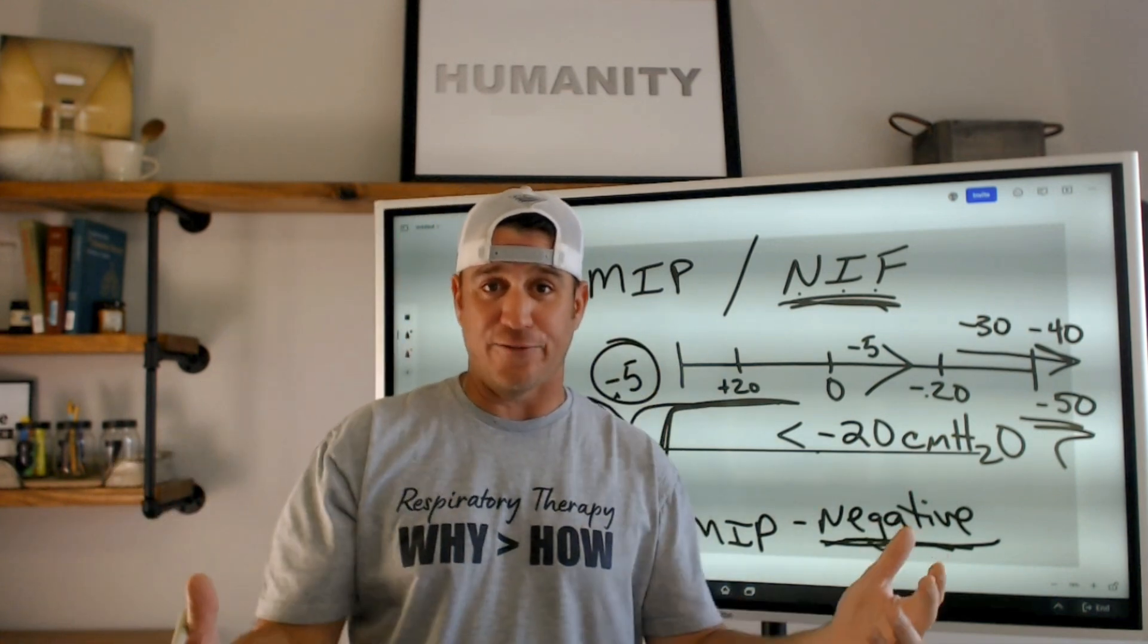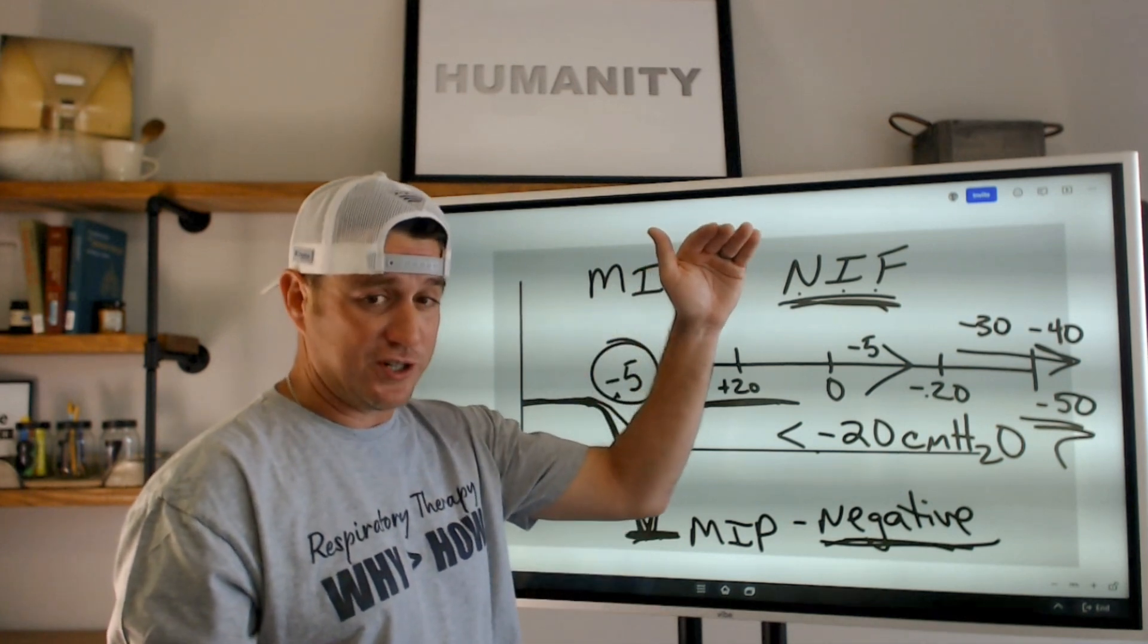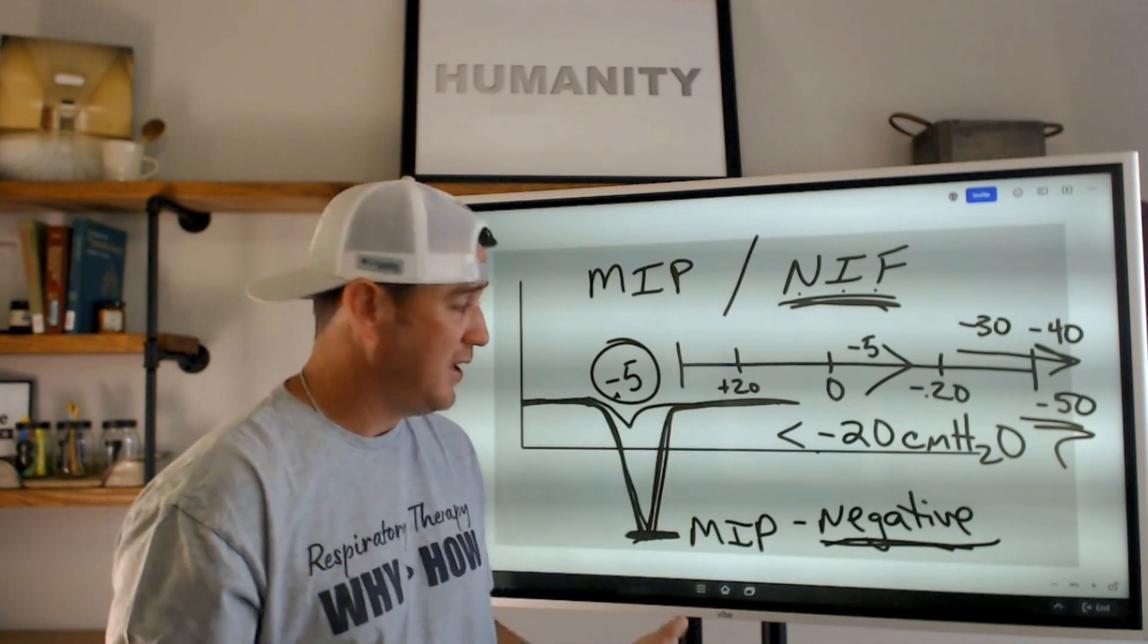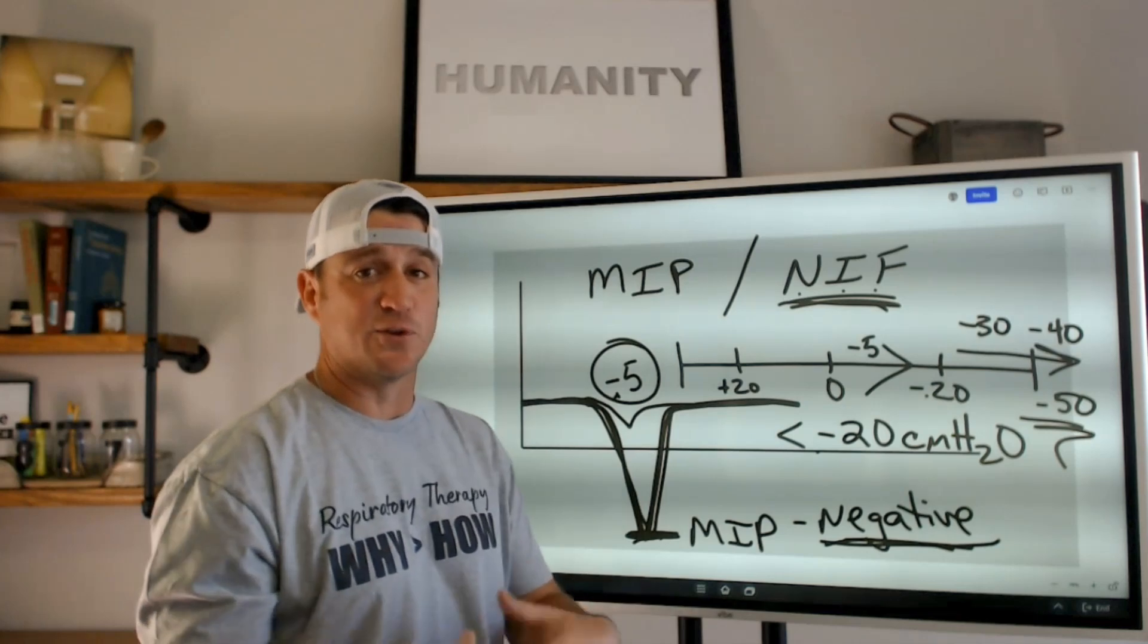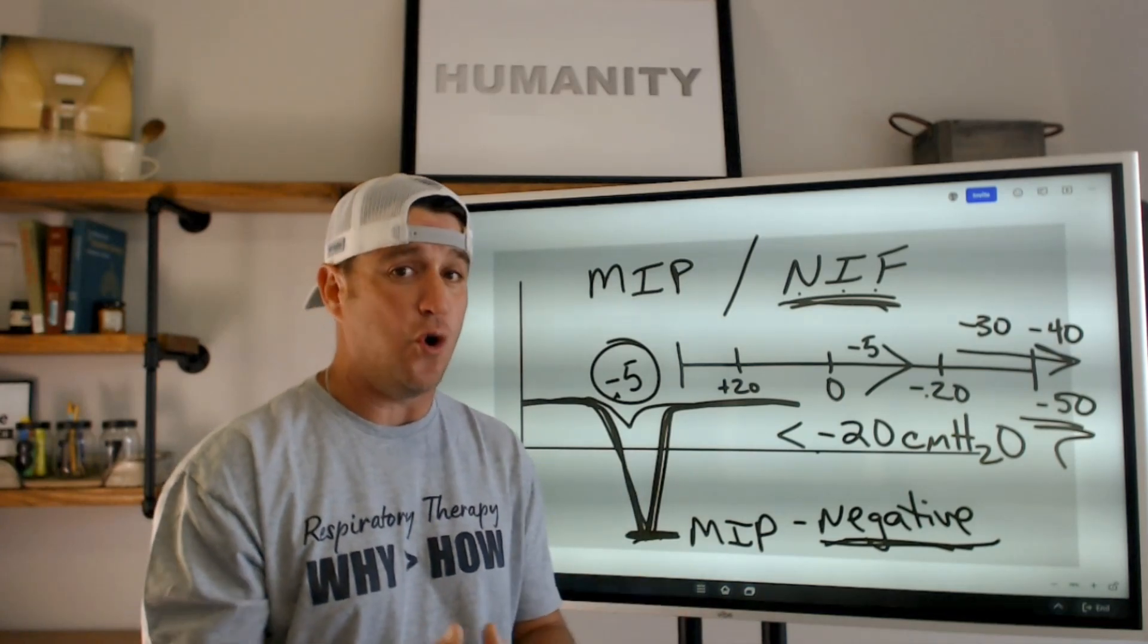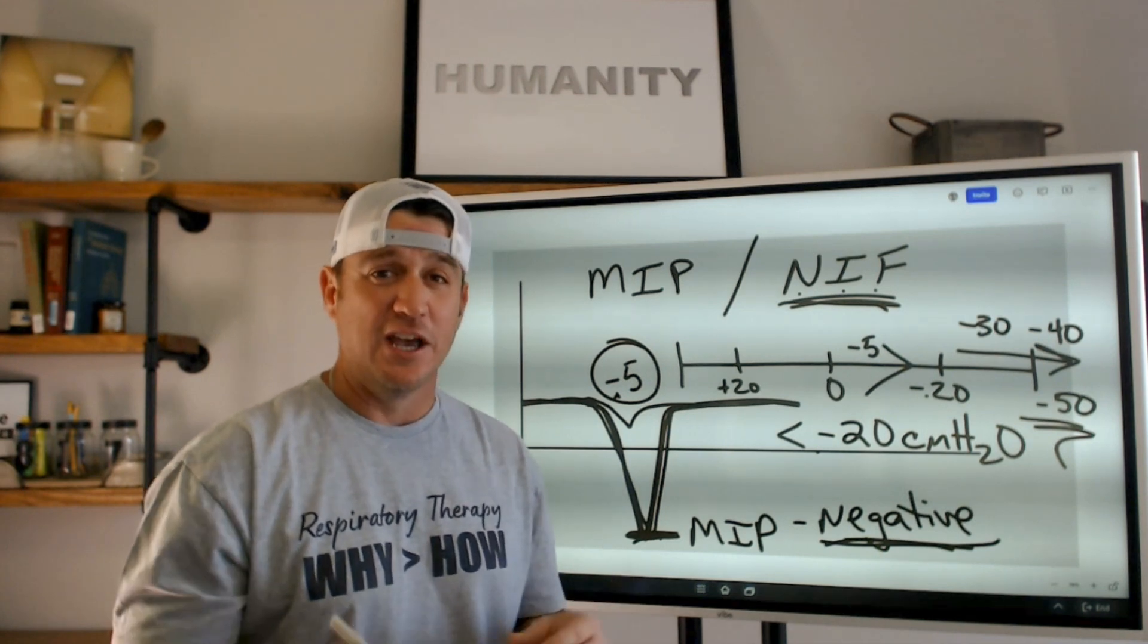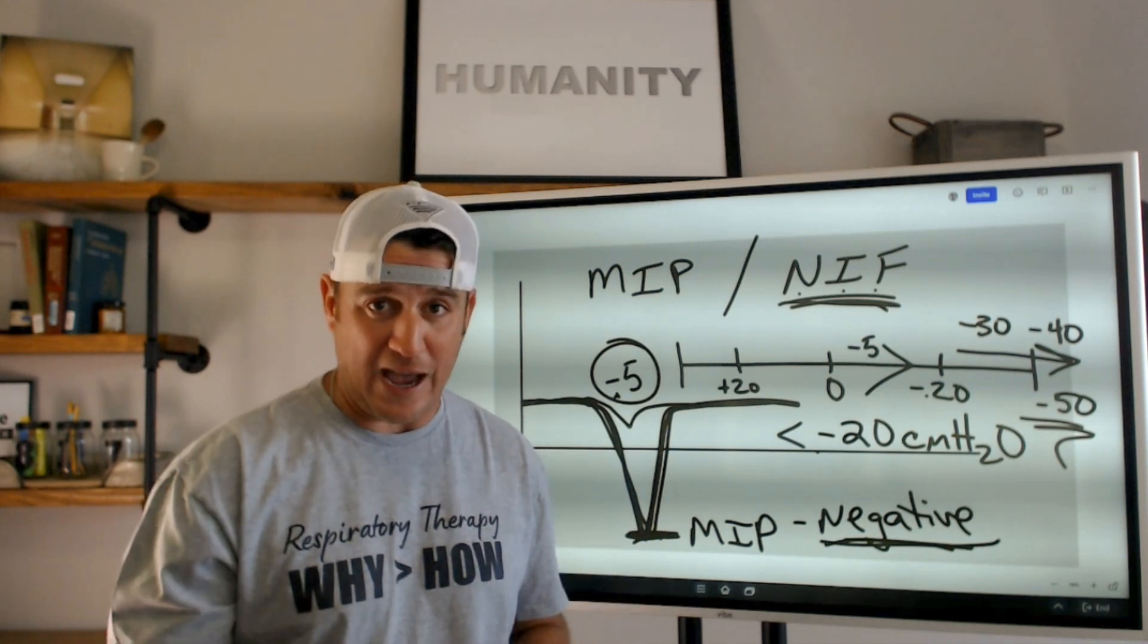And that's the difference between PIP and MIP. Remember, PIP, the peak pressure during the inspiratory phase of a positive pressure breath. MIP is an assessment that we do to assess for readiness from weaning or readiness for liberation from mechanical ventilation or to monitor patients' spontaneous pulmonary mechanics during neuromuscular times like Guillain-Barre or Myasthenia Gravis.